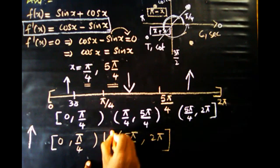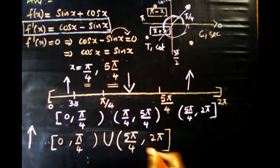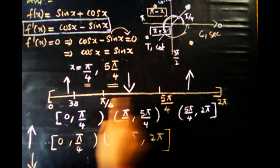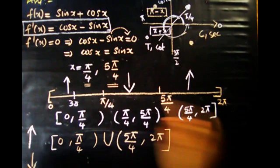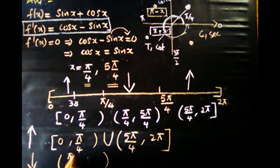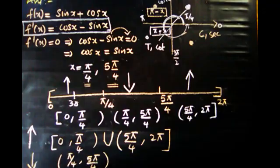Therefore the function is increasing on the interval (5pi/4, 2pi]. The analysis of increasing and decreasing intervals for f(x) = sin x + cos x is complete.